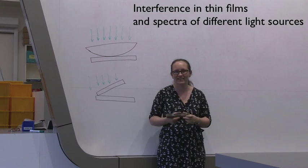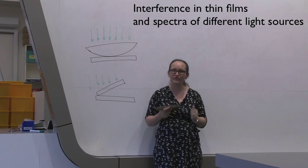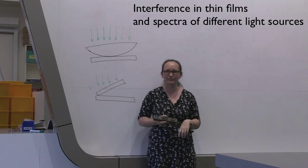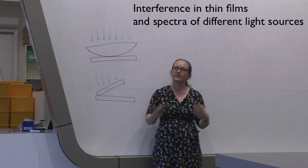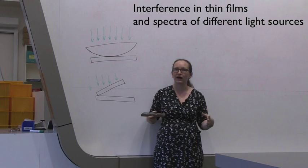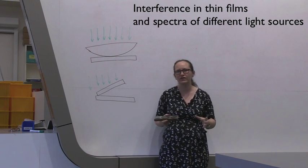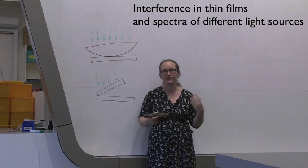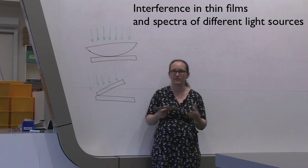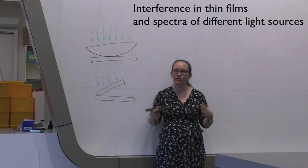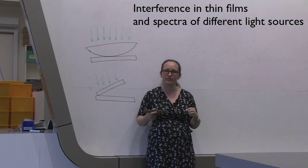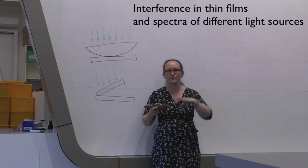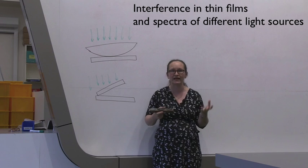Welcome to the Interference in Thin Films and Spectra of Different Light Sources Laboratory Exercise. This laboratory exercise has three parts. In the first two parts, you're going to be analysing photographs on the computer taken of interference patterns with different setups. And then in the third part, you're going to be using a digital spectrometer to measure the spectra coming from different common light sources.